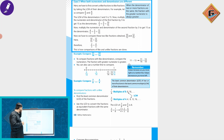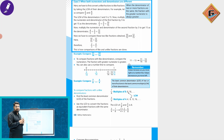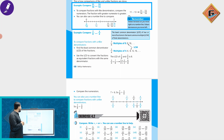Now we compare the two like fractions obtained: 10/15 and 12/15. Since 12/15 is greater than 10/15, and simplifying gives 4/5 is greater than 2/3. To compare fractions like 11/14 and 13/14 with the same denominator, simply compare the numerators.